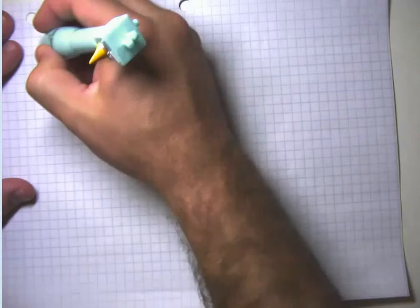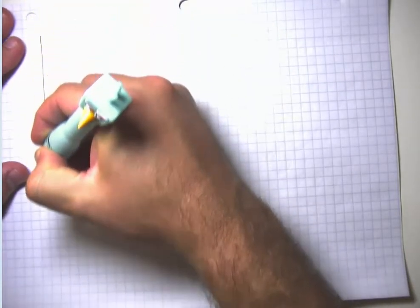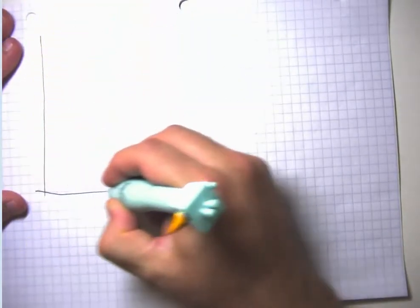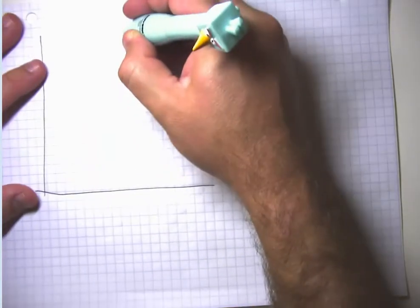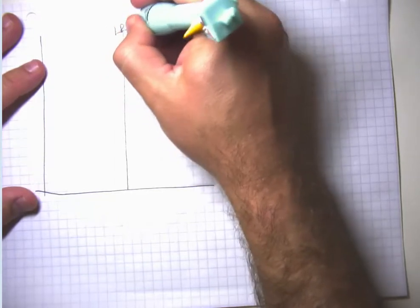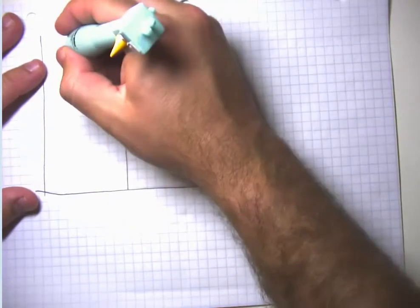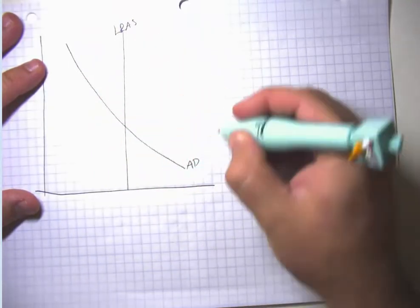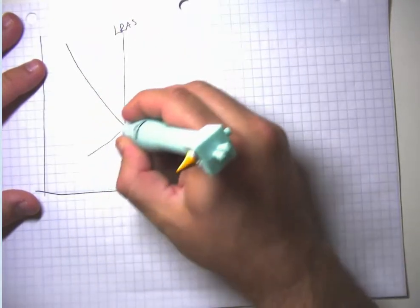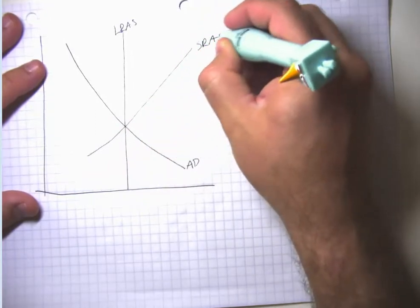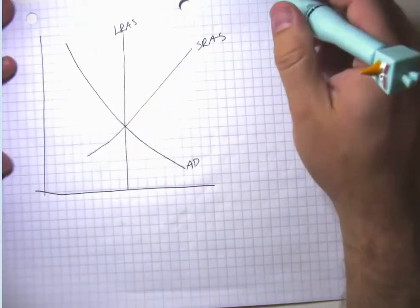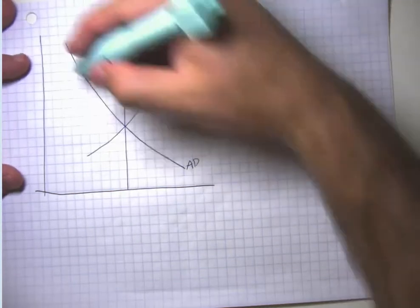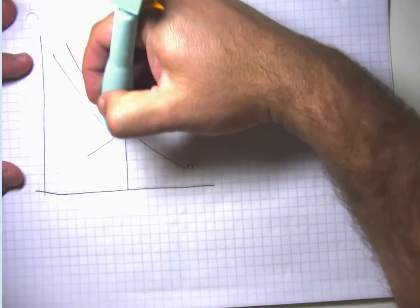This gets us toward the idea of how we adjust back to a long-run equilibrium. One possibility is that misperceptions only last so long, so eventually the short-run aggregate supply curve catches up with the change in aggregate demand. But a potentially more interesting story is how sticky wages play into all this.